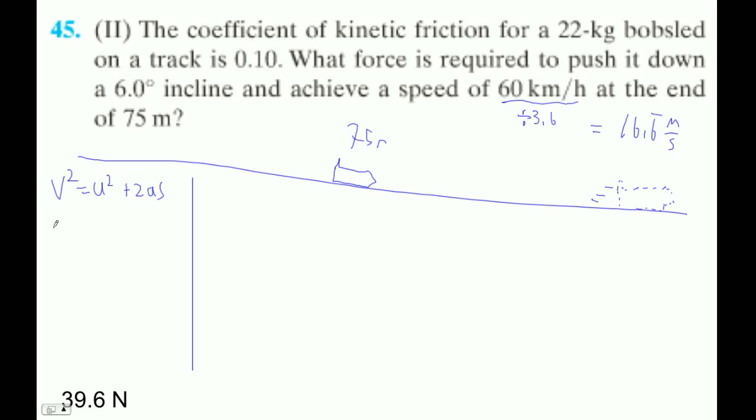My final velocity is 16.6 bar. My initial velocity is 0. So that equals 0 squared plus 2 times a times, and then it's down the plane, so it's negative 75.